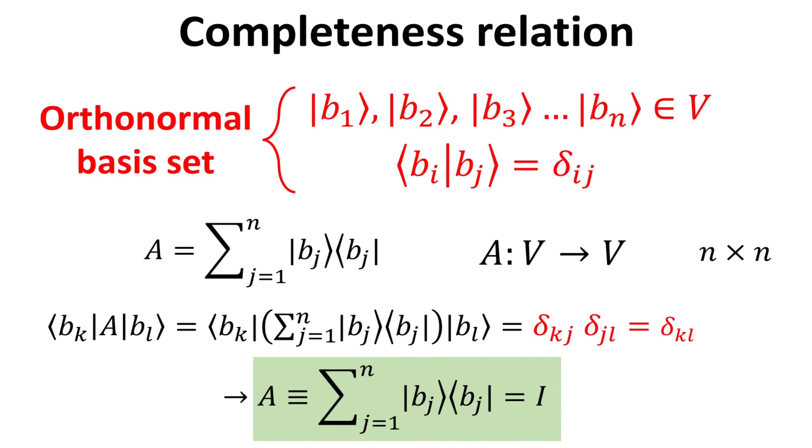which is the sum of outer products, where each outer product is constructed from the ket b sub j multiplied with its bra counterpart. The operator A is thus a n by n matrix.